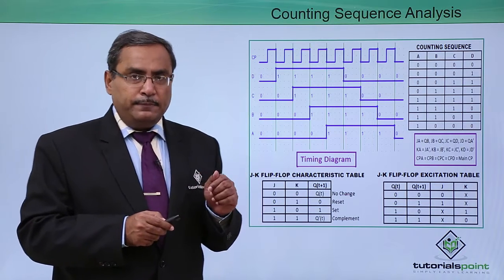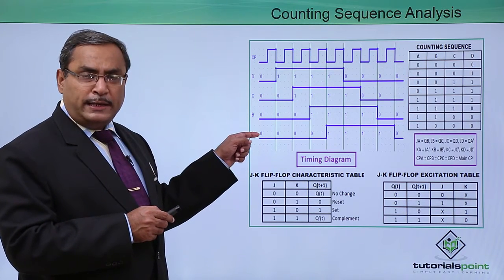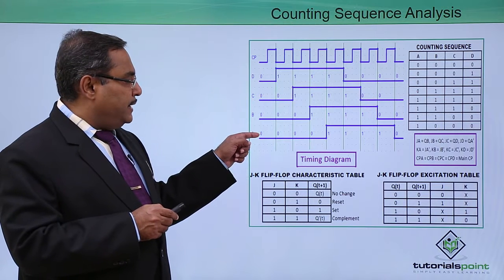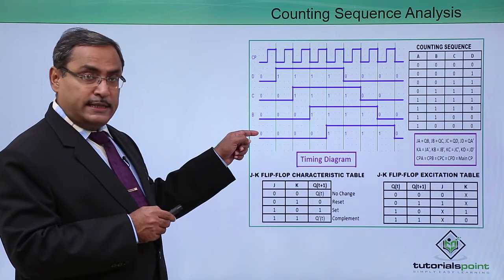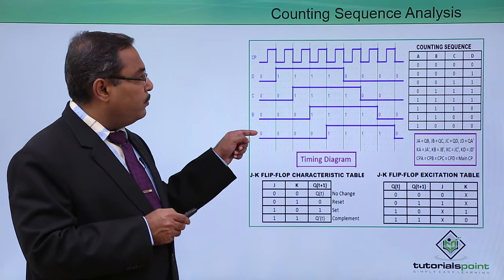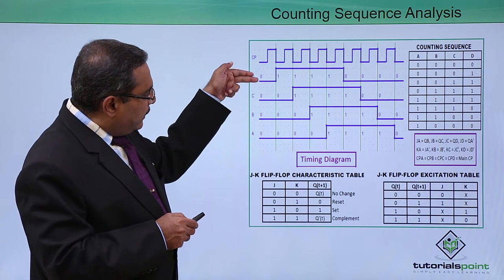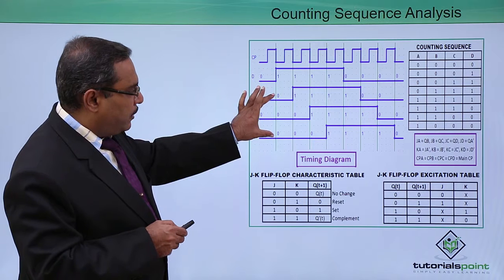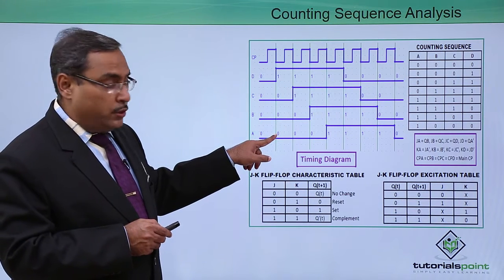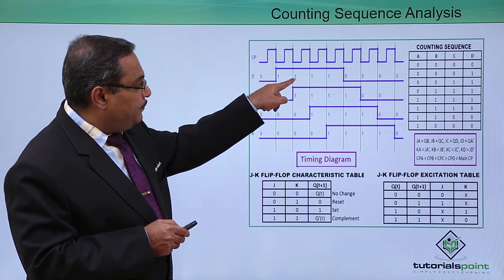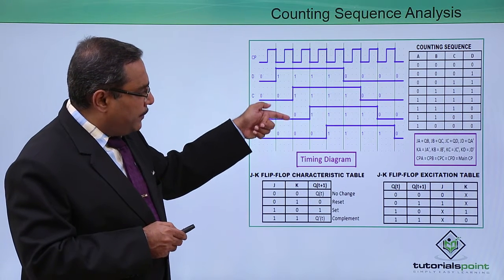The complemented switch tail counter means if A is there, its complement — here it is 0, so its complement will be 1 — will be going there and the other 3 bits will be shifted down. Its complement here is 0, so its complement will be 1, so 1 is coming here and 1 0 0 is coming down.